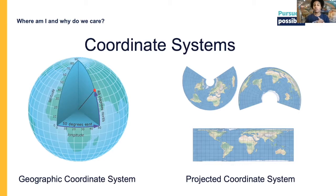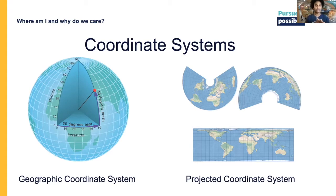Now let's switch over to projected coordinate systems. Imagine this 3D surface — this sphere — flattened out to a 2D surface. Some projections use a geometric shape which can be cut and unwrapped. The three main types of projected coordinate systems involve projections onto a cylinder, cone, and plane. Coordinates in projected coordinate systems are usually measured in meters or feet from a point of origin.